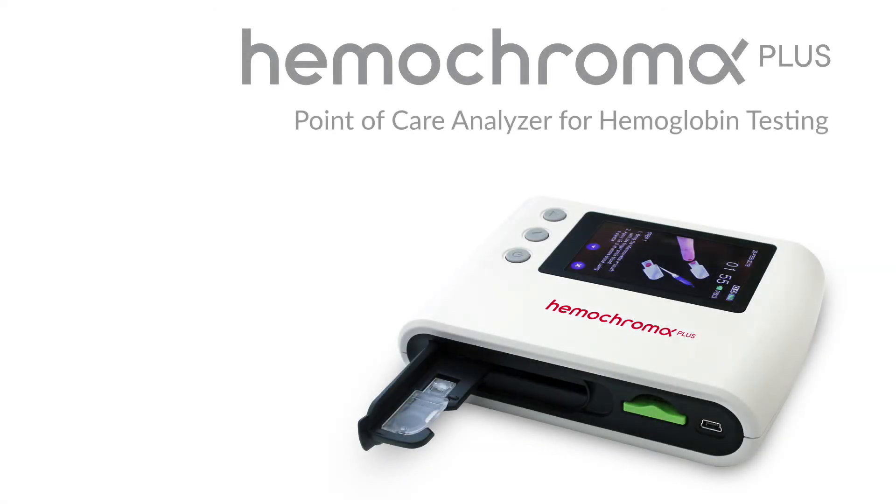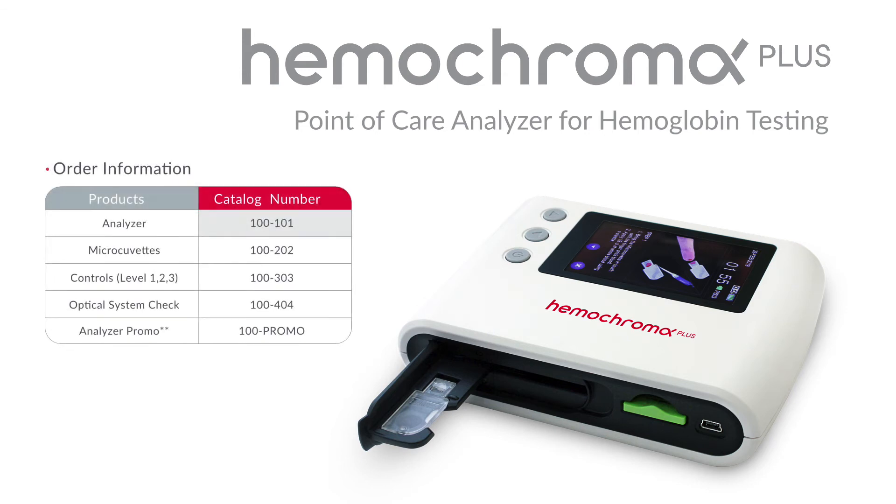The Hemochroma Plus Analyzer Item Number is 100-101. For more information, visit us on the web at Immunostics.com.